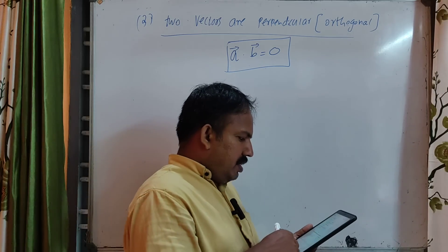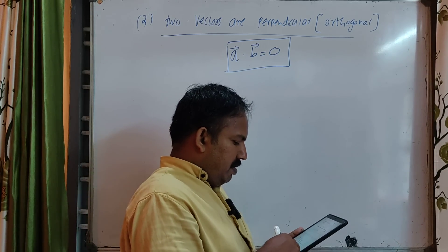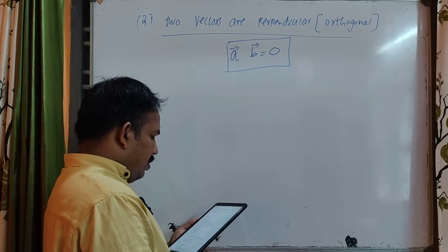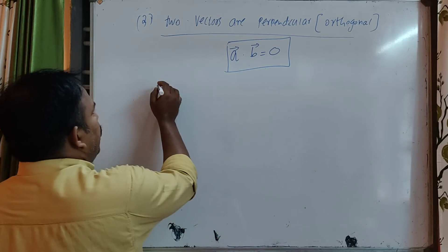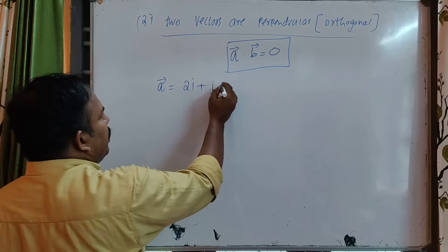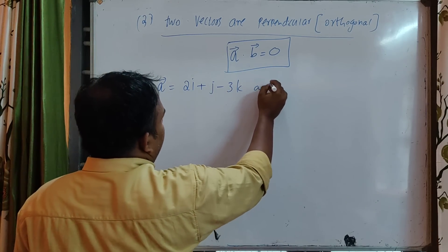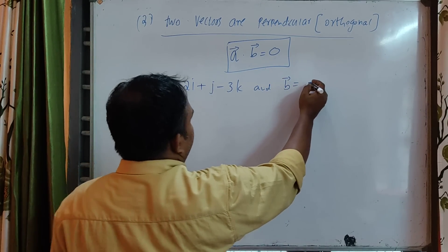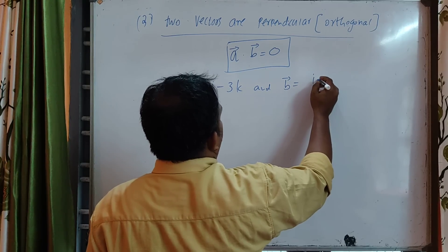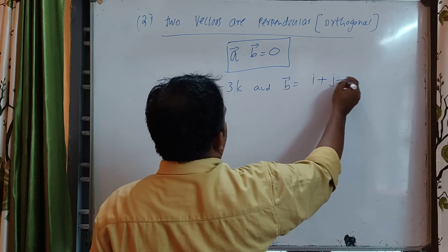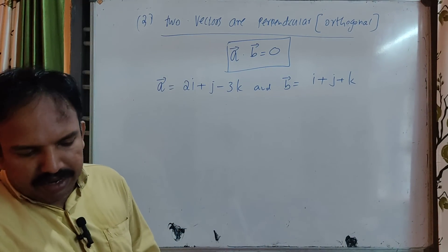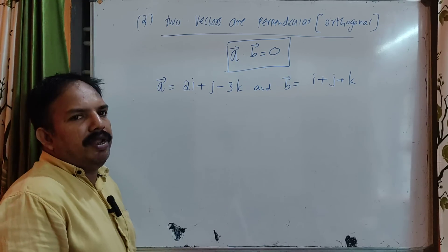Cross the line. Prove that a equal to 2i plus j minus 3k and b equal to i plus j plus k are perpendicular. Two vectors a and b are perpendicular here.